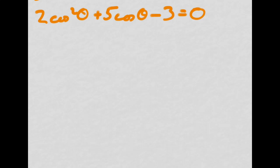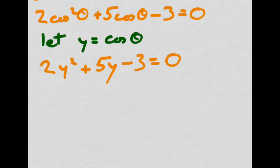It's quite difficult to spot. So instead of writing cosine theta every time, I'm going to substitute y in to make it more obvious to me. So this would be 2 instead of cosine squared theta, 2y squared plus 5y minus 3 equals 0. Bog standard quadratic.